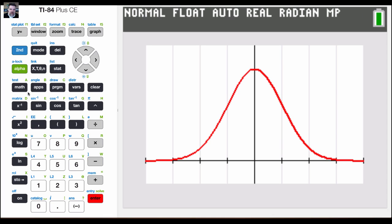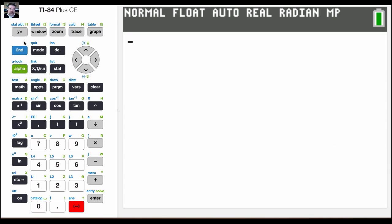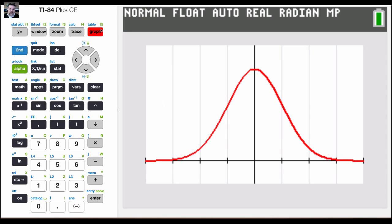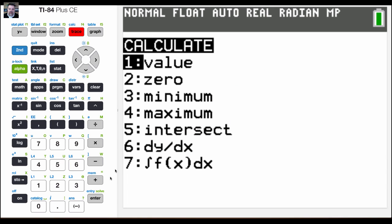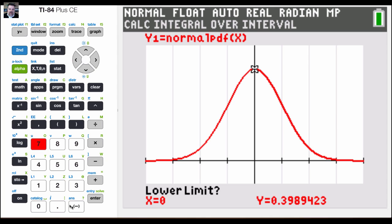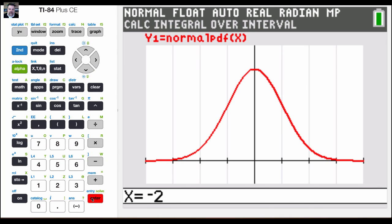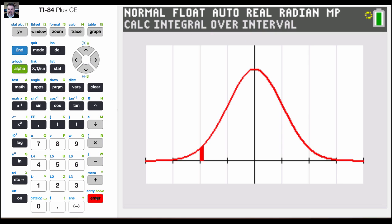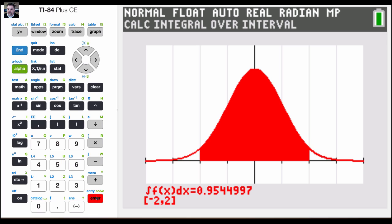So for example, remember in the empirical rule, if I go plus or minus... let me graph that real quick. If I hit second trace, option number seven, and I go from negative two to two, remember that that's going to be about 95% under the area under the curve or 0.95. And sure enough, it is. From negative two to two, I've got 0.9544987.